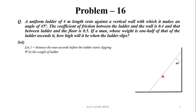Let W be the weight of the ladder. The weight of the man who is climbing is W/2. The coefficient of friction between ladder and wall, μw, is 0.4, and the coefficient of friction between ladder and floor, μf, is 0.5.